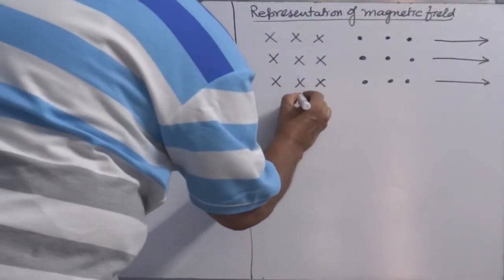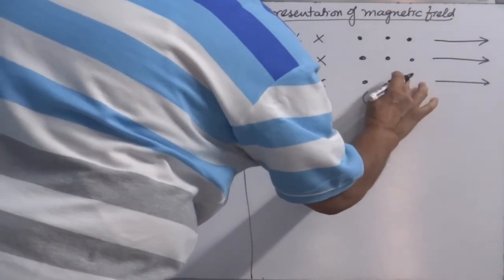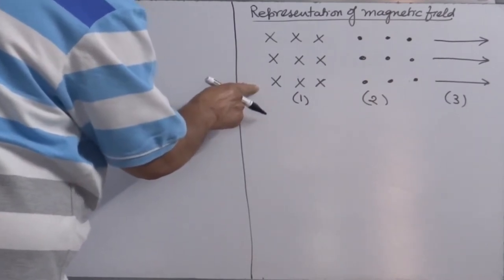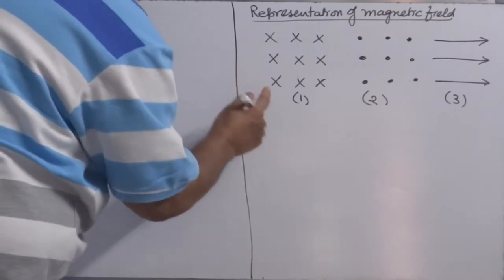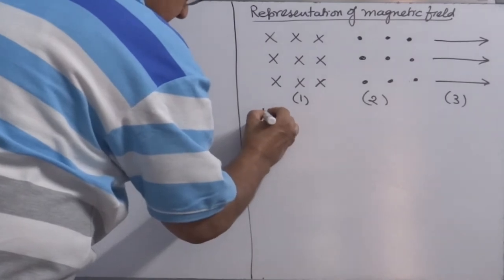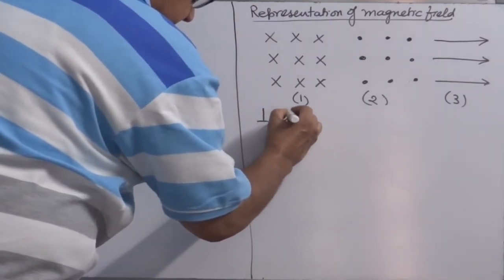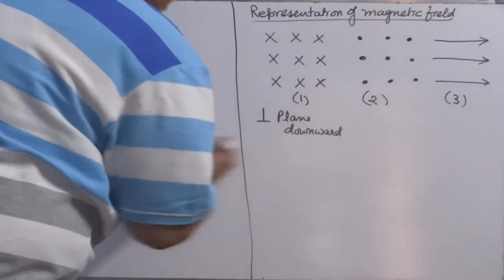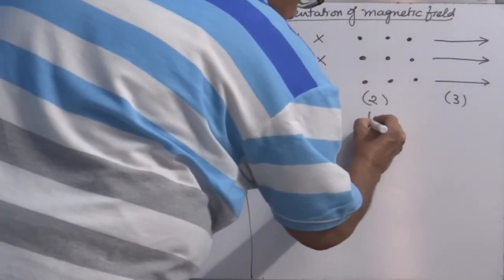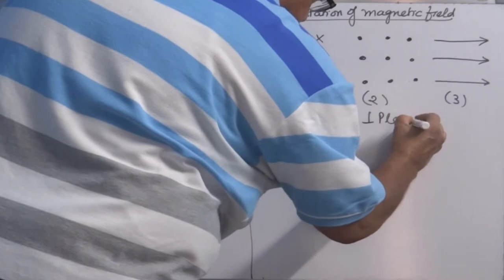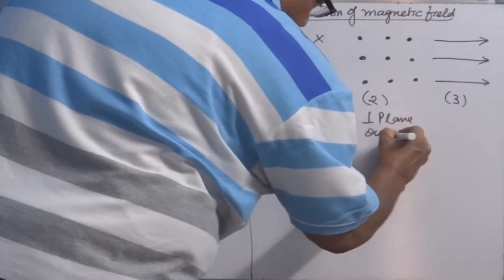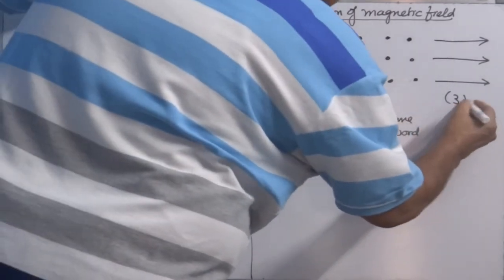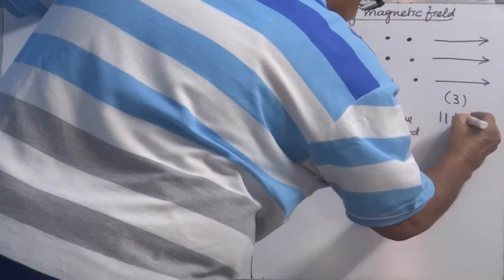This is the first method of representation. Second, this is the third. Whenever magnetic field is represented like this, it means the direction of magnetic field is perpendicular to the plane — downward. When it is marked with a dot, then it is perpendicular to the plane — outward. When it is marked with parallel lines, it is parallel to the plane.